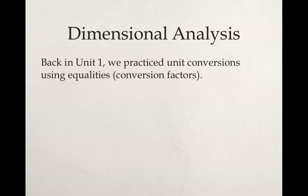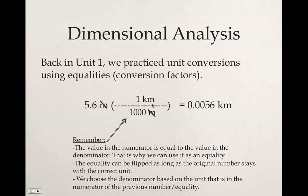So remember, just a quick review of dimensional analysis. We did this back in Unit 1 for unit conversions. Just remember a couple of the concepts that came in. The value in the numerator is equal to what's in the denominator. One kilometer is equal to a thousand meters. This is why we can use it as an equality. I can flip this around depending on if I had started with kilometers. We simply choose the denominator so that I can cancel out my meters. Whatever unit we start with should be the unit that then diagonally is in the denominator.